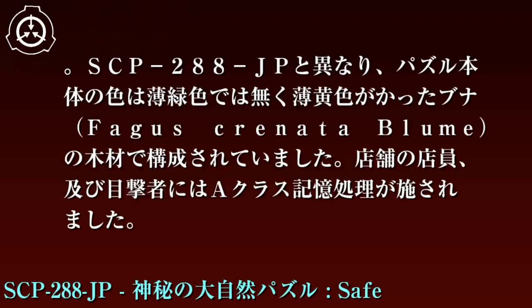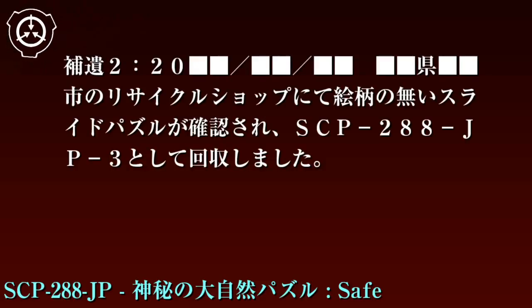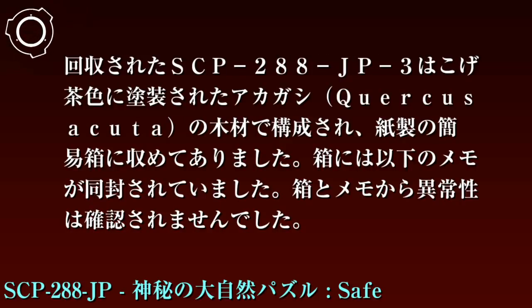2000年月日：県市区の雑貨店にて商品棚から突然植物が発生した事件の報告を受け調査したところ、SCP-288-JPと同様のオブジェクトを発見・回収されました。これはSCP-288-JP-2に認定されています。SCP-288-JPと異なり、パズル本体の色は薄緑色ではなく薄黄色がかったブナの木材で構成されていました。店舗の店員および目撃者にはAクラス記憶処理が施されました。